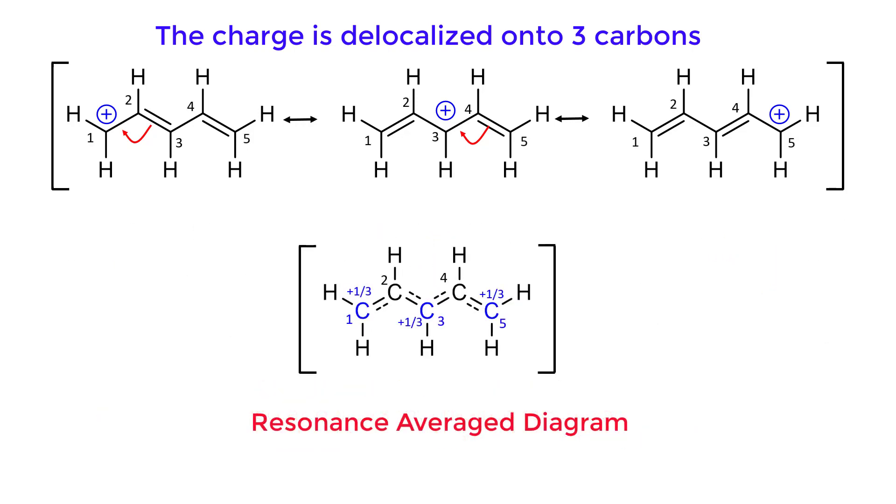The charge distribution of this molecule is a weighted average of the three structures, in which each structure contributes one-third to the overall description of the electron density in the molecule. Thus carbons 1, 3, and 5 all bear partial positive charges.